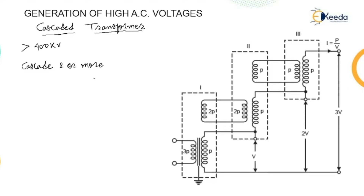The transportation cost and erection cost can be reduced, making transportation and erection easier. The transformer cost can also be reduced. Heavy insulation is required in a single-stage transformer for high voltages exceeding 345 kilovolt. It is found that the cost of insulation for such voltages for a single unit becomes proportional to the square of the operating voltage — this relationship is very important.